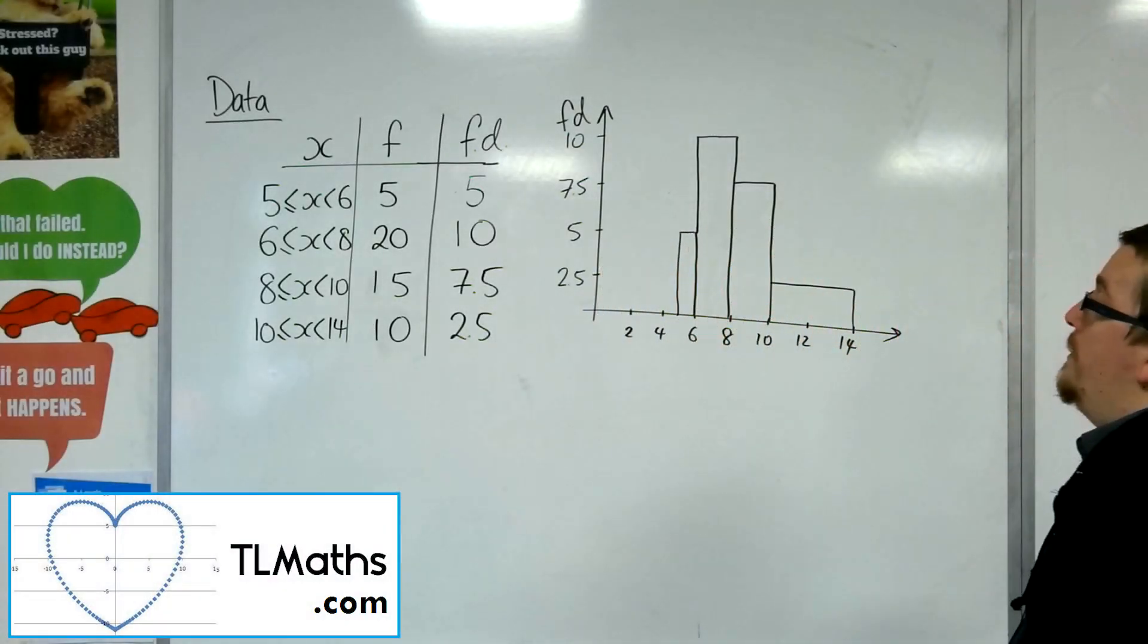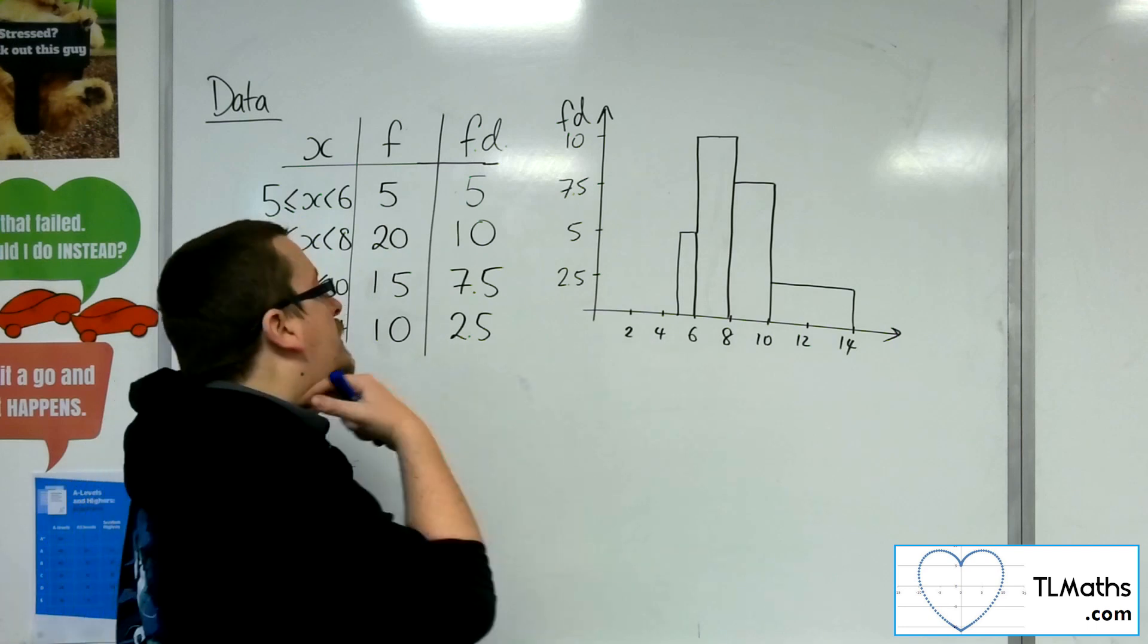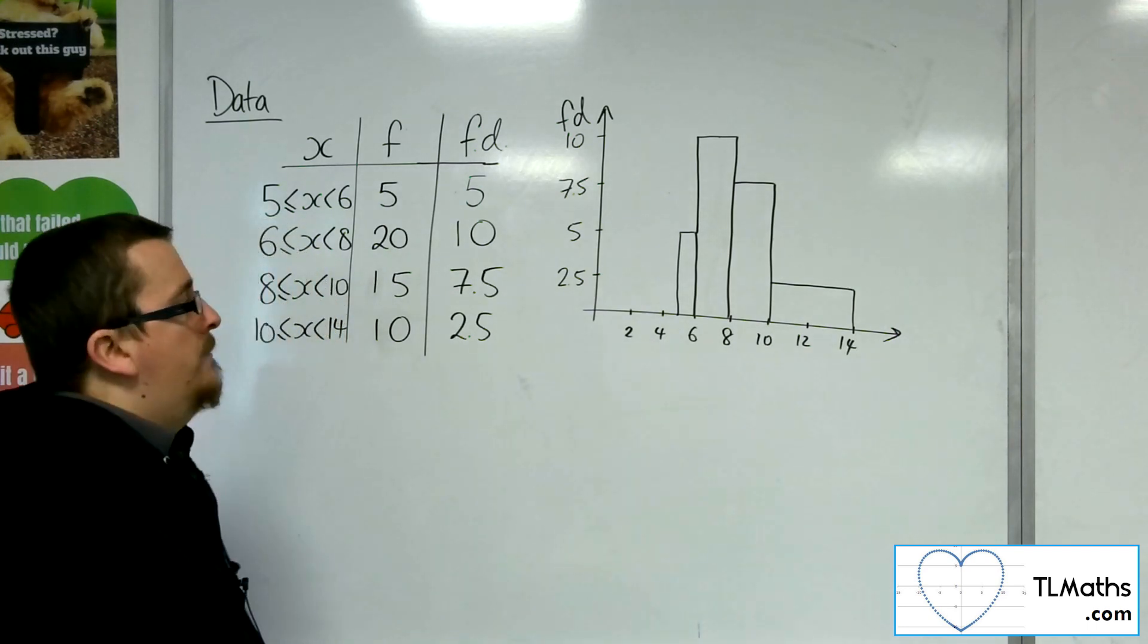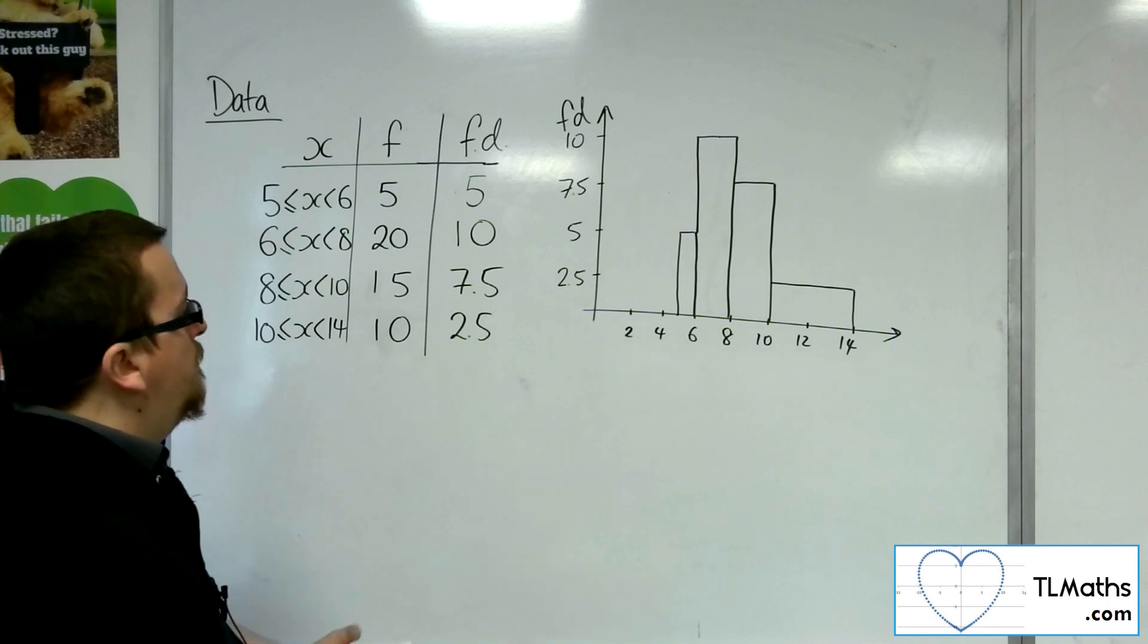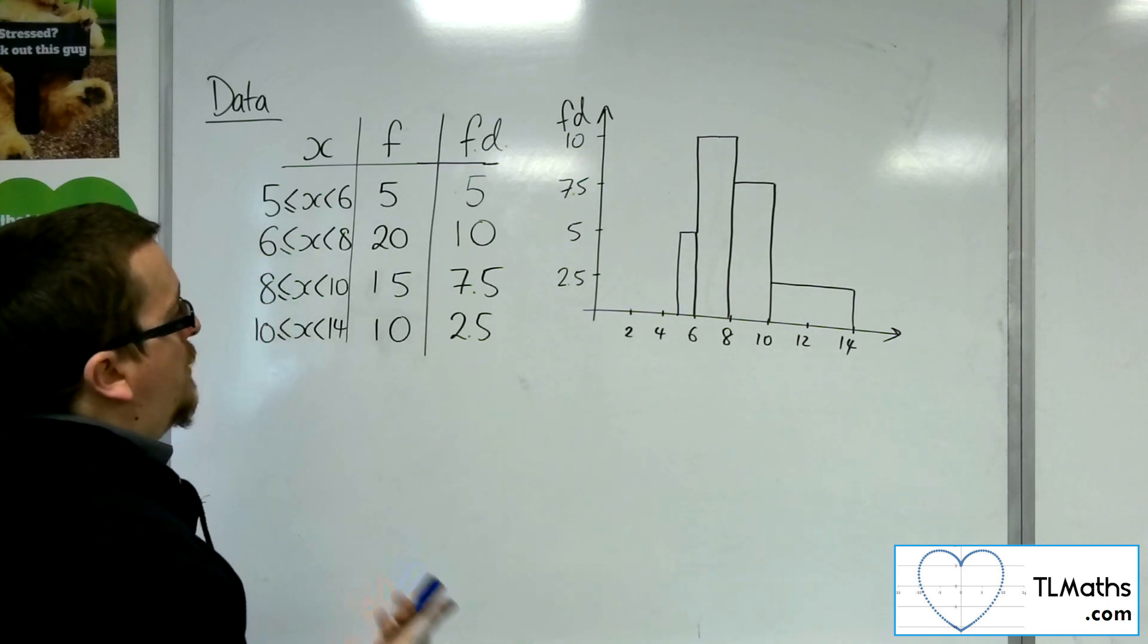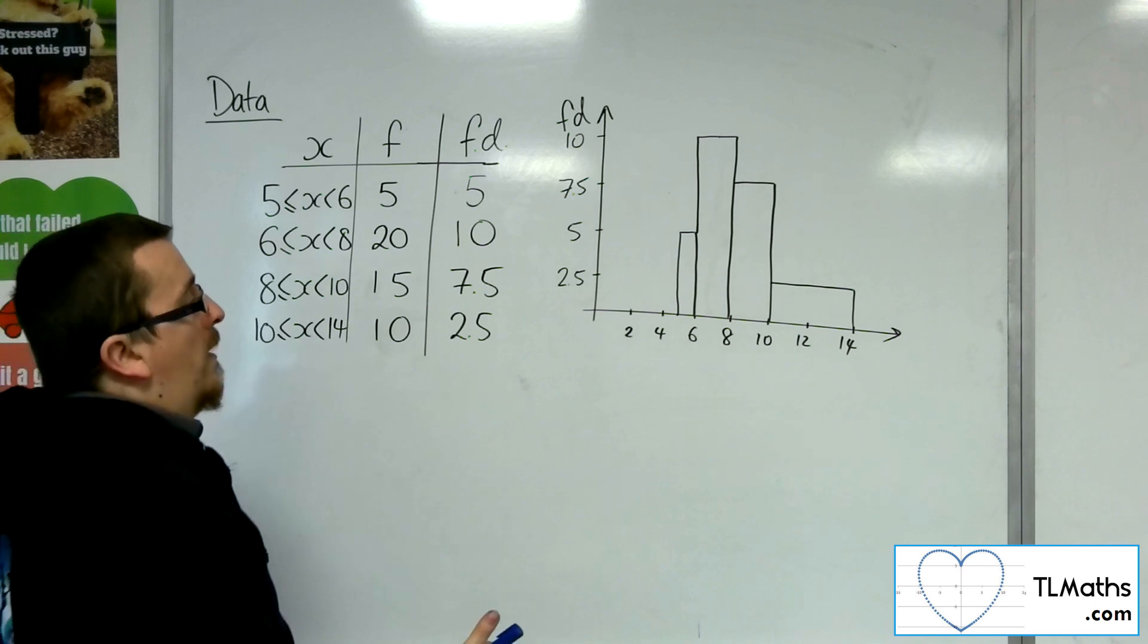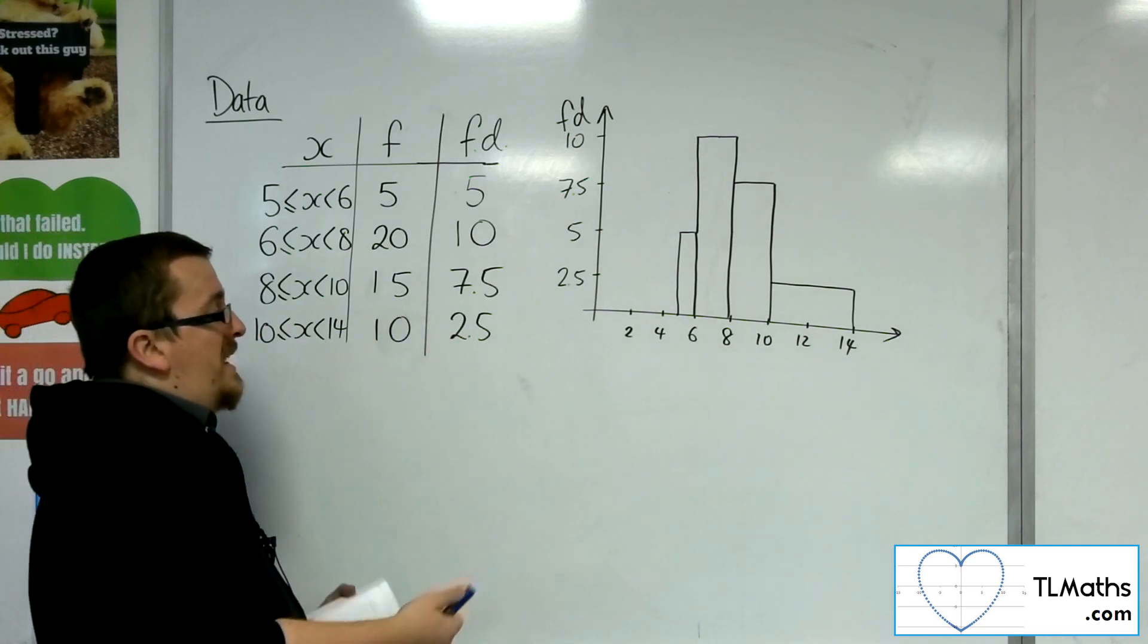So let's say I wanted to find the median, lower quartile and upper quartile for this histogram. So how you would do that, because it's grouped continuous data, I'm just going to divide the total frequency by 2 to find the median.